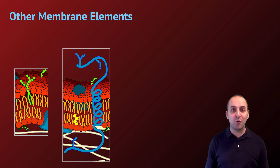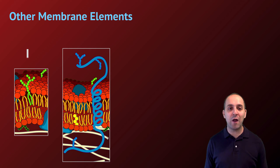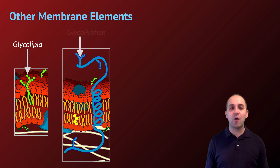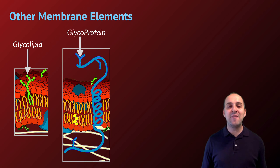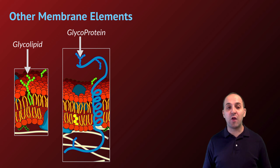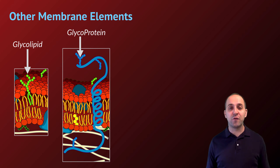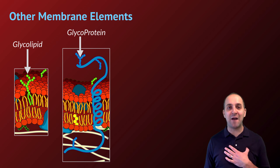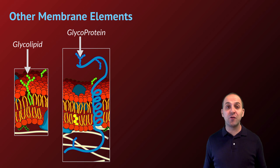Outside of the phospholipids and proteins in the membrane, we have other structures as well. We get structures referred to as glycolipids and glycoproteins. That prefix glyco refers to sugars, and these are small groups of bonded sugars — what are referred to as oligosaccharides — that are attached either to lipids in the case of glycolipids, or proteins in the case of glycoproteins. One of the major functions in us is that they help each cell in our body identify itself as actually being part of our body and not some foreign invading cell, which would have different structures to its glycolipids or glycoproteins.